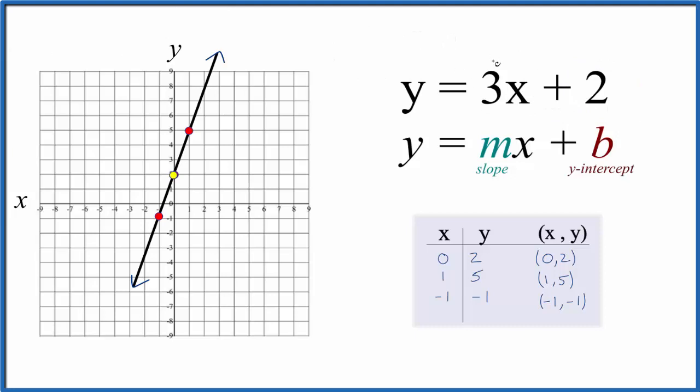And then for the 3x, we like to consider this to be a fraction, so we'll say 3 over 1. That's the same as 3. That gives us rise over run.